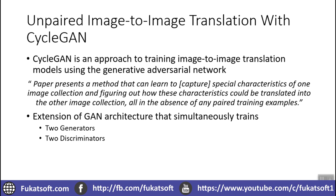We will learn the characteristics of one collection and learn how we can use these characteristics to translate another image without the existence of paired examples. CycleGAN is a GAN network — a generative adversarial network — that has two generators and two discriminators which are simultaneously trained.